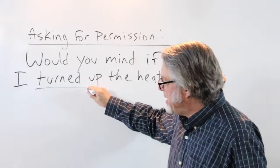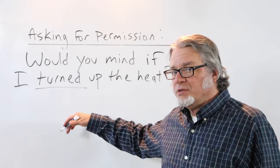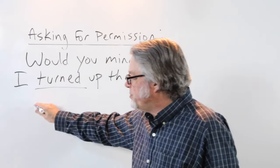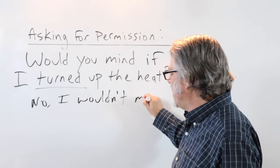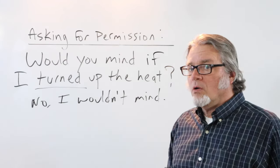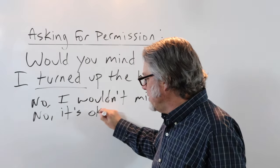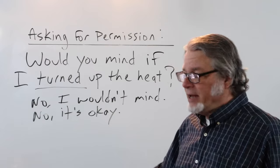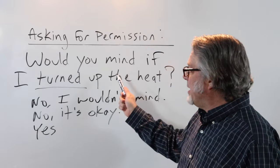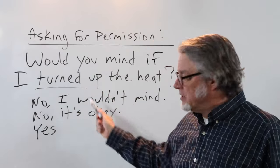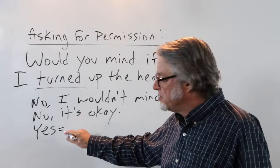For example: 'It's cold in here, would you mind if I turned up the heat?' Here again, the subject is 'I' and the verb is in the past tense. If the person is okay with this, the answer would be 'No, I wouldn't mind.'